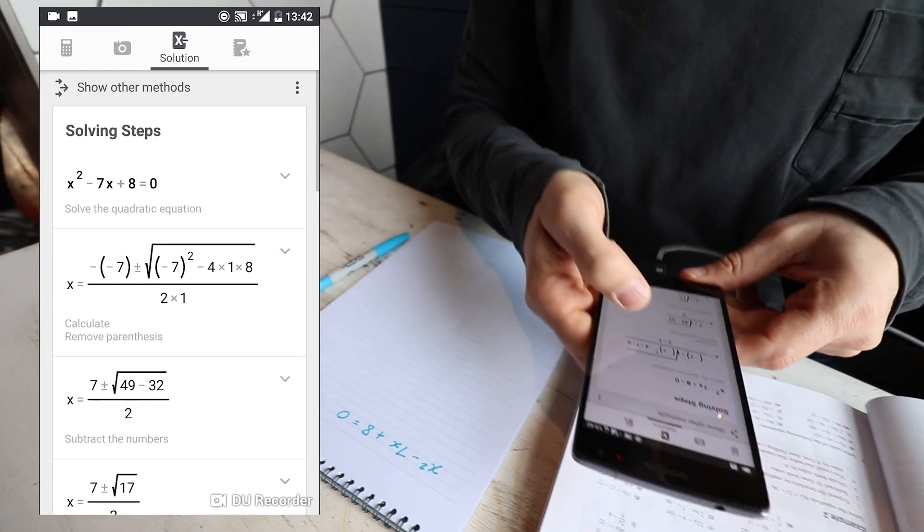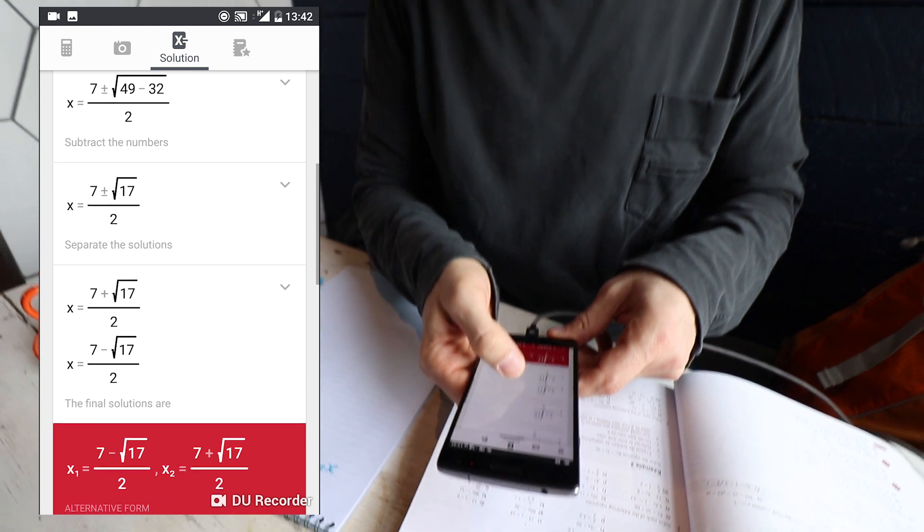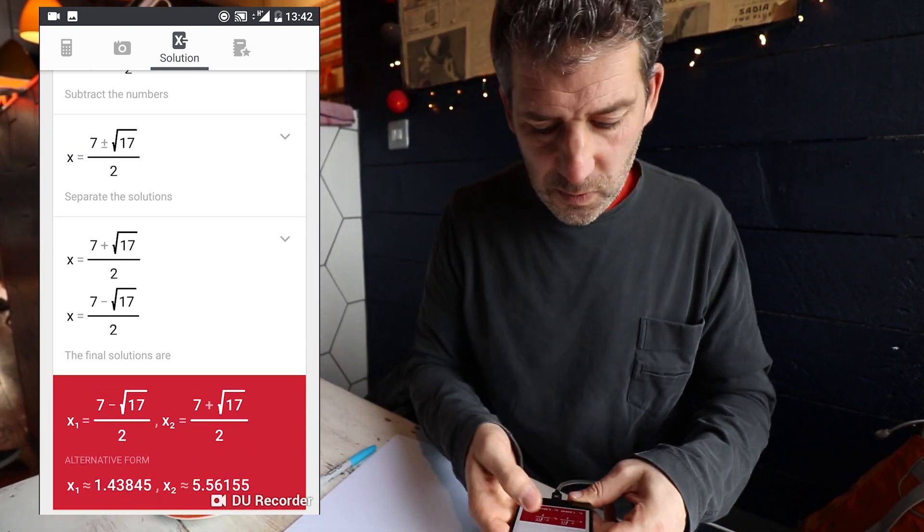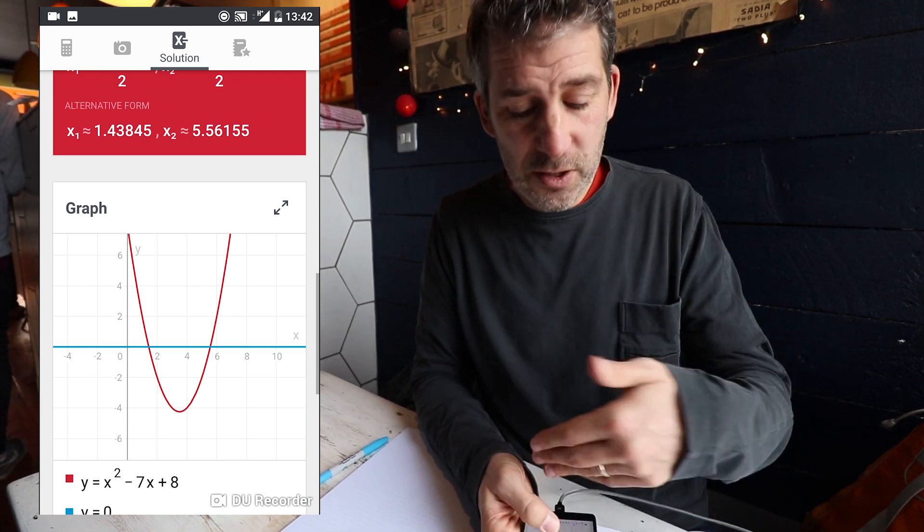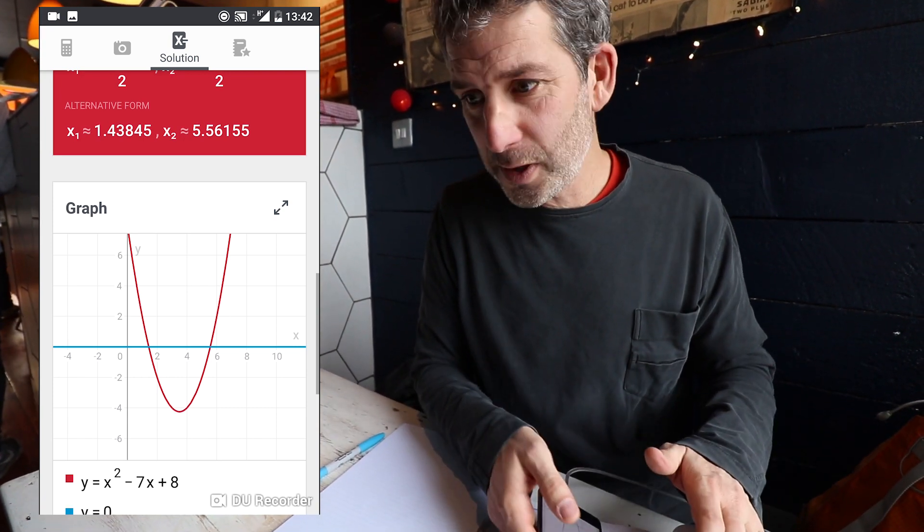Yeah. So there you go. You can see that on screen there, and it gives you the answer in surd form, you know, with the square root symbols, and it gives you the answer in decimals as well. And again, you've got the graph. It's showing you all the steps. Really, something else, isn't it?